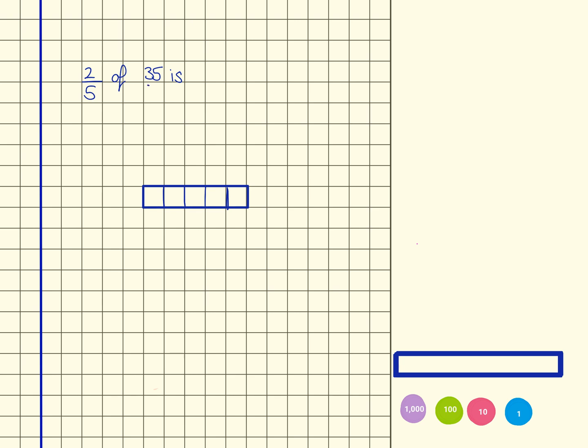Now I know that the total here, because it's of 35, the total is 35. And I need to calculate what 2 of those fifths are.